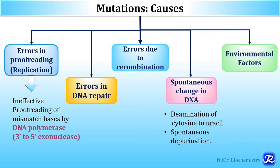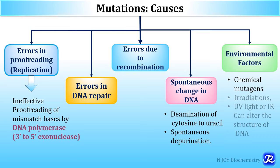Various environmental factors are also responsible for mutations. For example, chemical mutagens alter DNA bases or the structure of DNA. Examples include base analogues, alkylating agents, intercalating agents, nitrous acid (a deaminating agent), hydroxylamines, and aflatoxin. Even irradiation — ultraviolet light or ionizing radiations — can also alter the structure of DNA and lead to mutation. So, there are five important causes: errors in proofreading during DNA replication, errors in DNA repair, errors in recombination, spontaneous changes in DNA, and various environmental factors like chemical mutagens and UV light or irradiations.